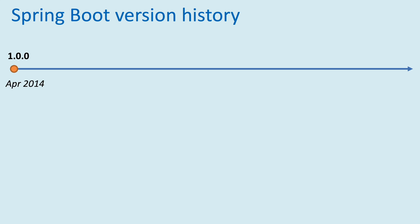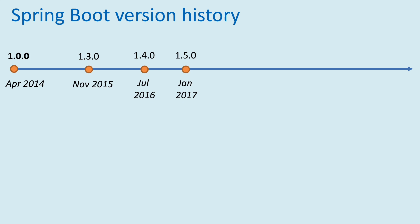Here are the main releases of Spring Boot throughout its history. The first major version, 1.0.0, was released in April 2014. Version 1.3.0 came in November 2015, and version 1.4.0 came in July 2016. Version 1.5.0 was released in January 2017, and about one month later the next major version, Spring Boot 2.0.0, was released in March 2018.